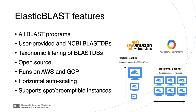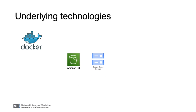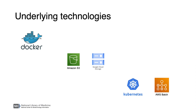Next we'll give an overview of how Elastic Blast works. Elastic Blast is implemented using Docker. It uses object storage such as AWS S3 or Google's GCS for BLAST databases, queries, results, and intermediary data, and Kubernetes on GCP and AWS Batch for cloud resource management and job orchestration.